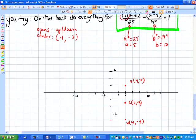And since b is 12 and it's under the x part of this, I've got to count 12 units to the right. So that's going to put me out here at 16 for another vertex at 16, negative 3. And the other one is going to be over here at negative 8, negative 3.